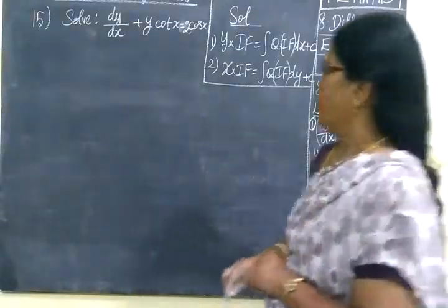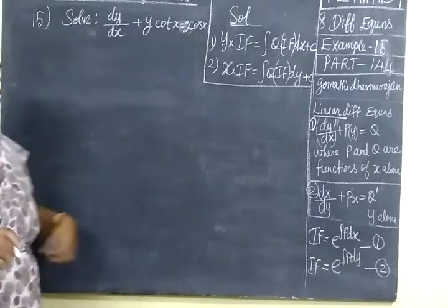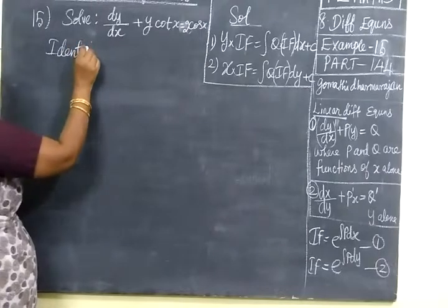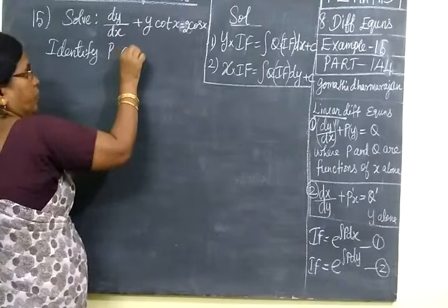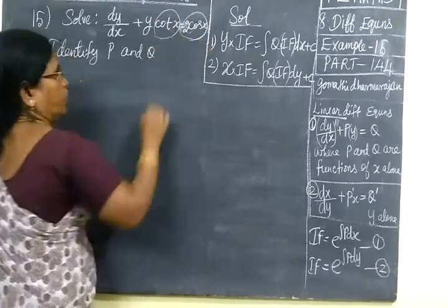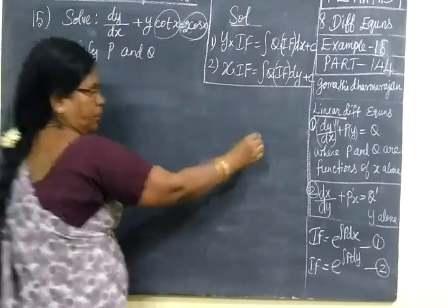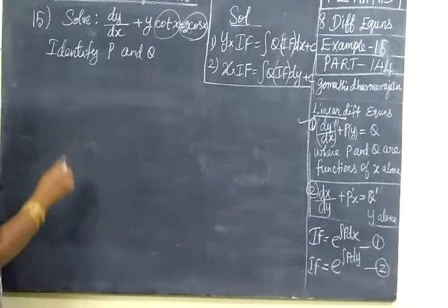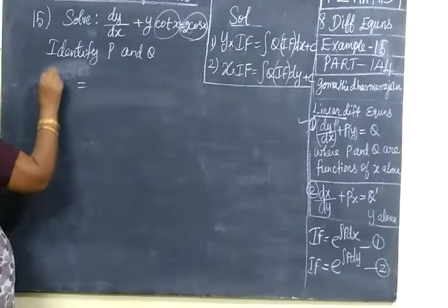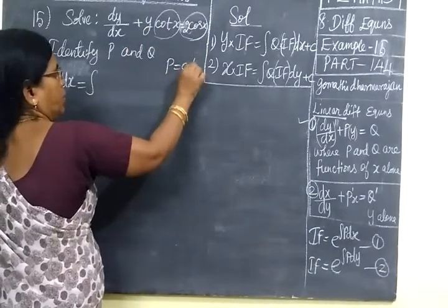The first problem is: solve dy/dx + y·cot(x) = 2cos(x). First we have to identify P and Q. So here P = cot(x) and Q = 2cos(x), and P and Q are functions of x. Since they are functions of x, we apply the first rule. So first we find e to the power of integral P dx.